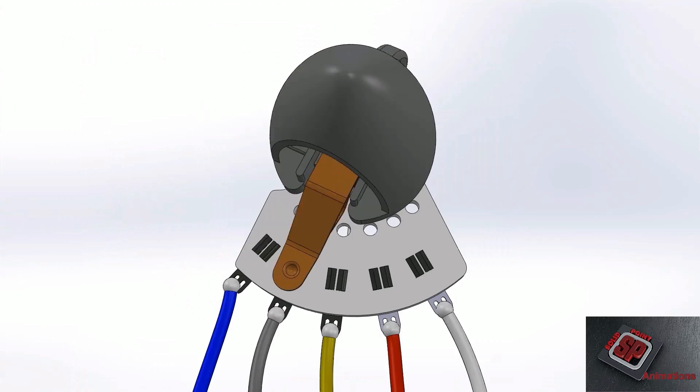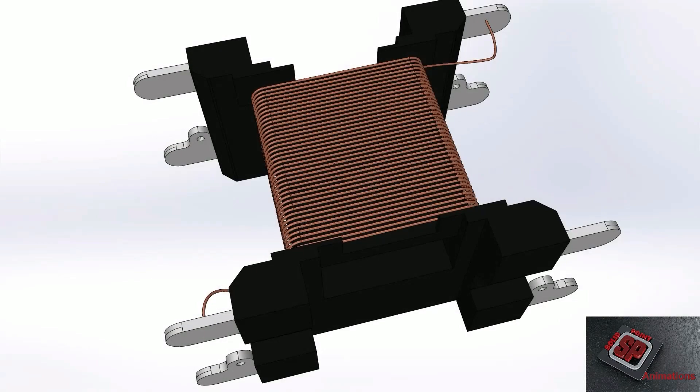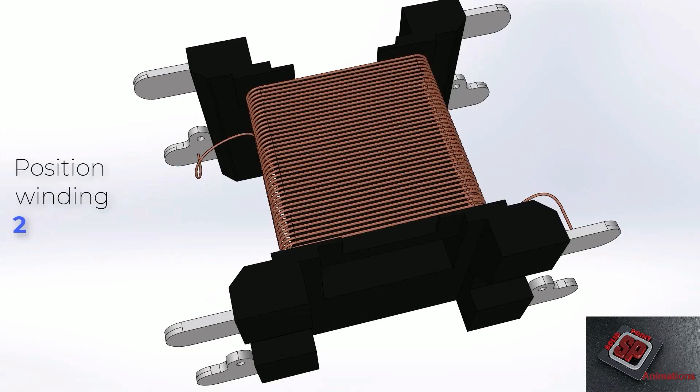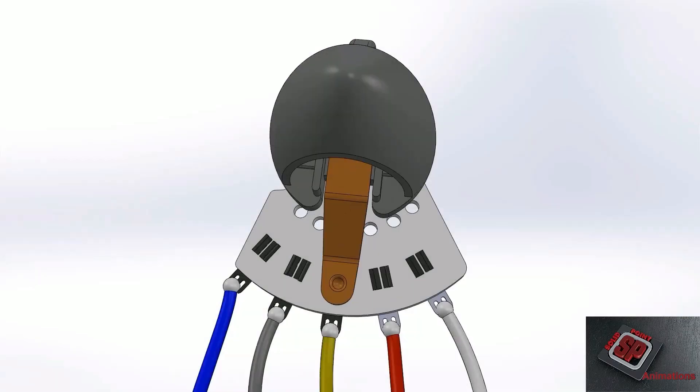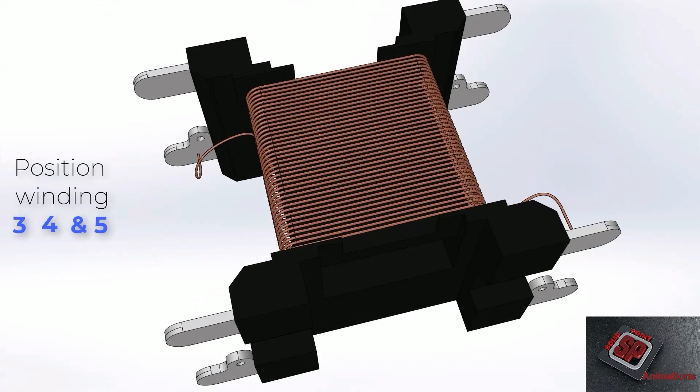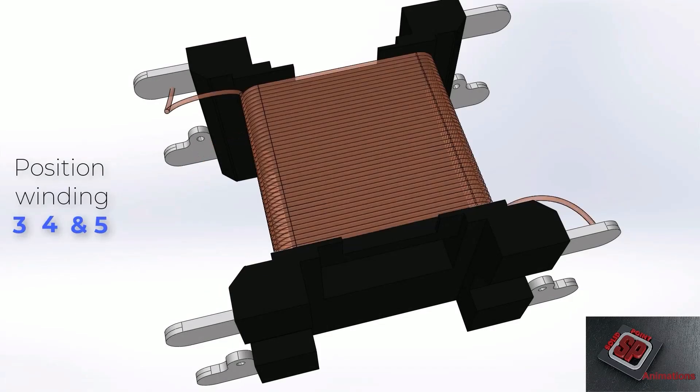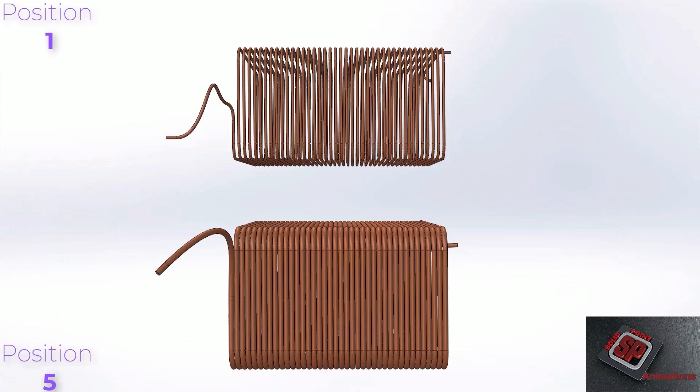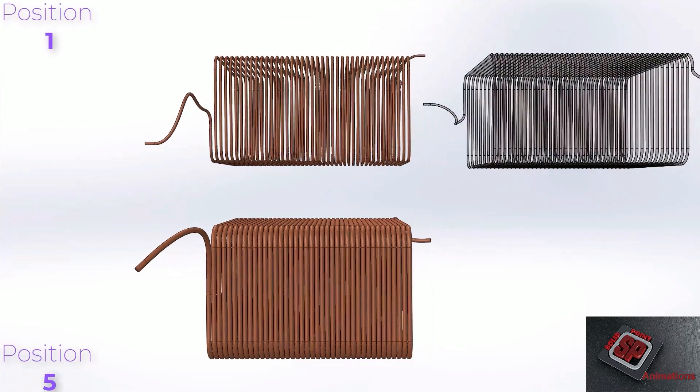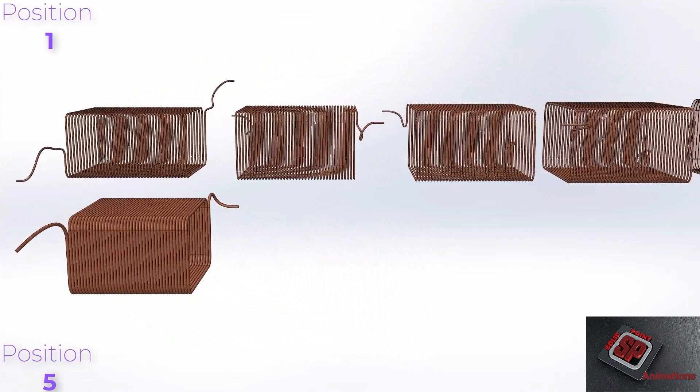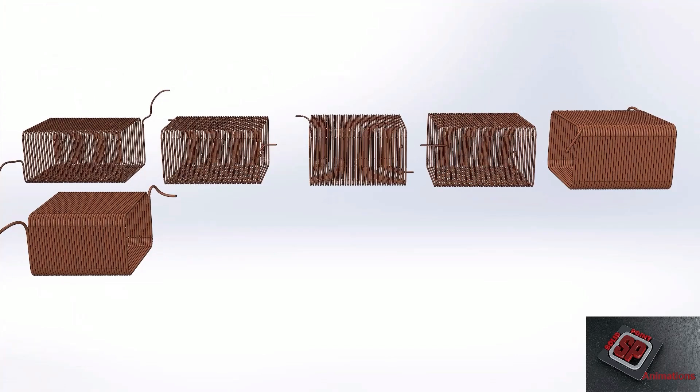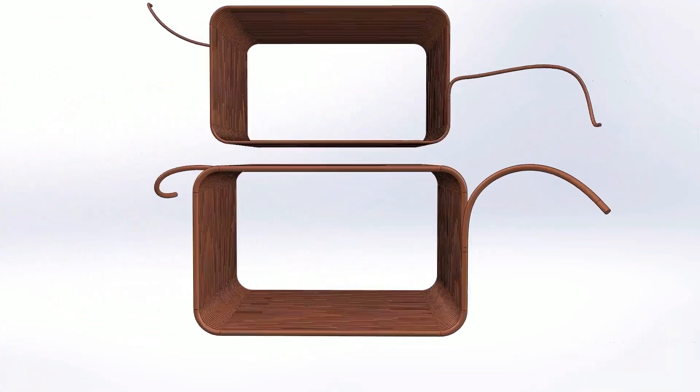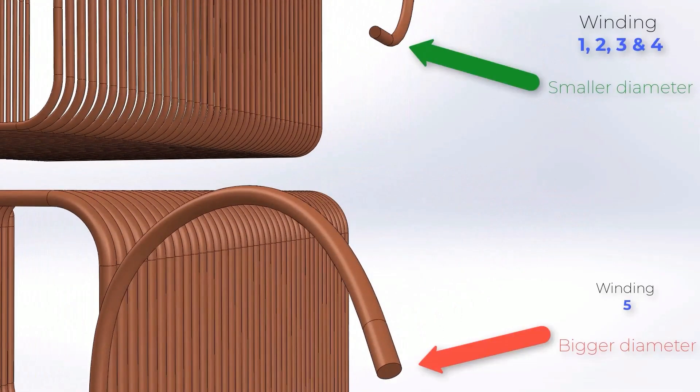If the speed control switch is set to position two, the electricity will be forced to travel through windings two, three, four, and five from over here. Position three only needs to travel through windings three, four, and five from here. Hopefully you get the pattern by now. So we see that the electricity that goes through position one has to go through the longest amount of copper wire, and position five goes through the shortest, plus positions one through four have a smaller diameter wire than position five does.